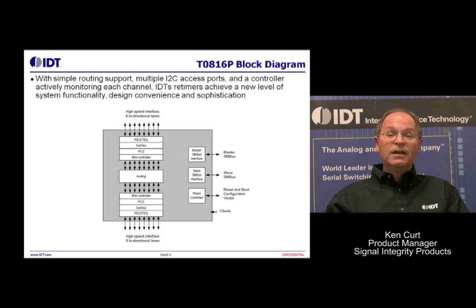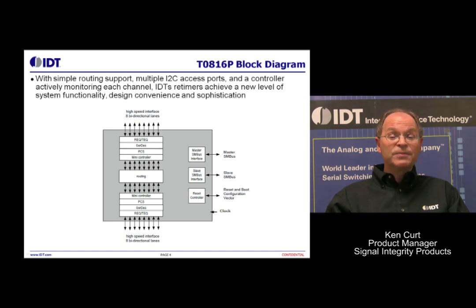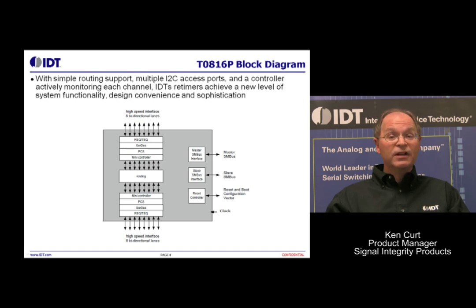As we go below the microcontroller, you'll see a routing function that supports simple routing, such as lane reversal, polarity swapping, and other simple things like that — it's not a packet switch, of course. Off to the right side of this image, you'll see the two I2C or SM bus ports. There's a master and slave port to give complete flexibility in your system application.